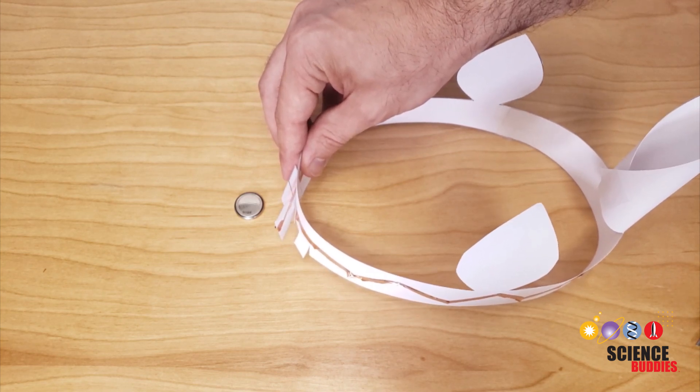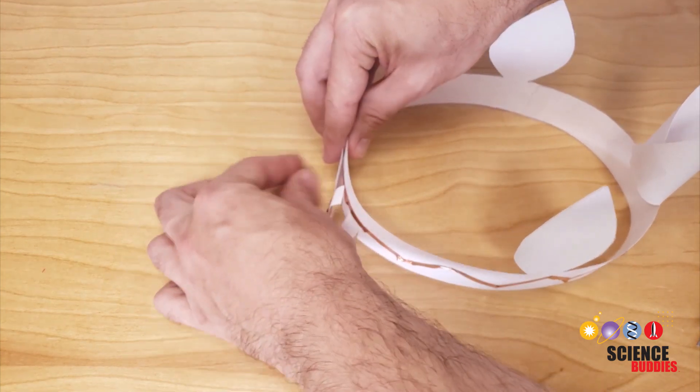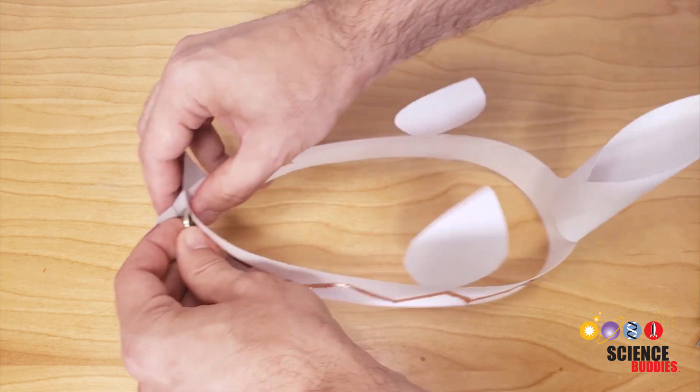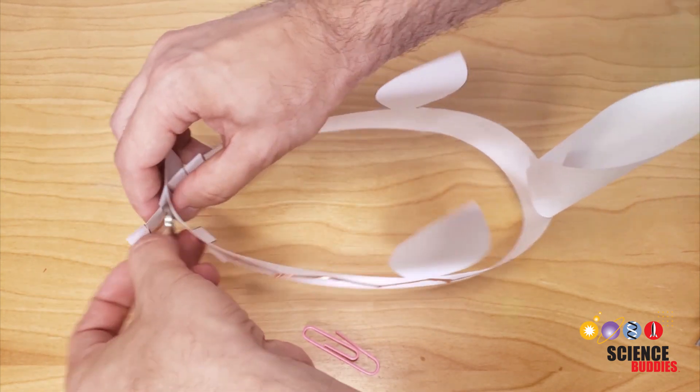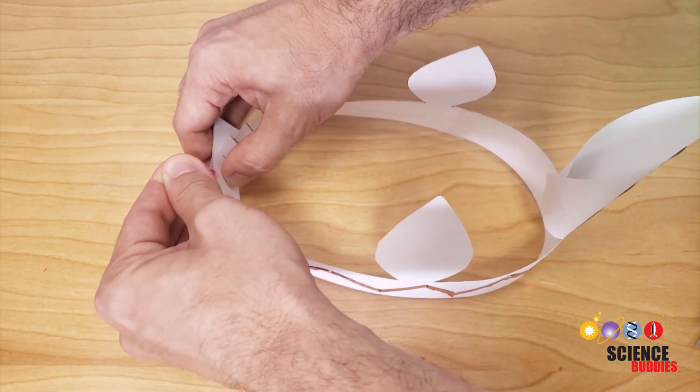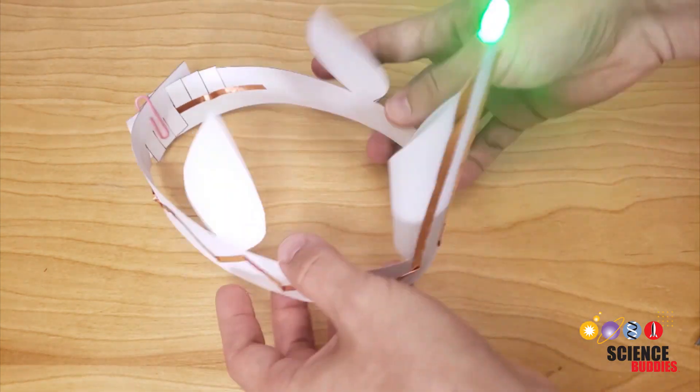So again use the tabs to adjust so it fits on your head, put the battery in, make sure the battery is facing the right direction for the LED to light up. So there's no LED lighting up, I have that backwards. I'll flip it around and my LED lights up. Slide a paper clip over the battery so it stays in place and there you go, you have your light up unicorn headband.